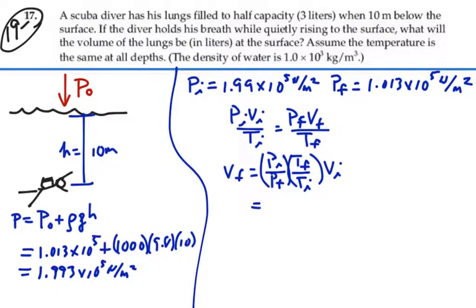So V final is going to equal P initial over P final times T final over T initial times V initial. This will be 1.99 times 10 to the 5 over 1.013 times 10 to the 5. The 10 to the 5s cancel out. T final and T initial were told are going to be the same, so temperature doesn't make a factor here. That's going to be 1, and then our V initial was 3 liters, so we're going to have an answer in liters. And this is equal to 5.89 liters.